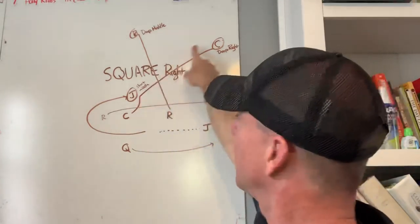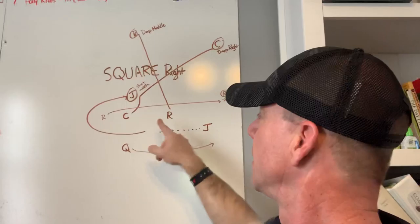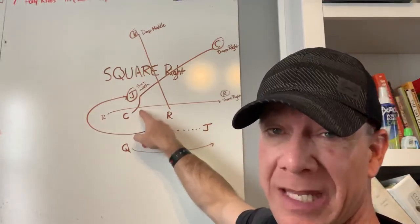Center, if I call square right, center's always going to be deep to that side. So deep right. And ideally here, the center may hesitate a little bit.